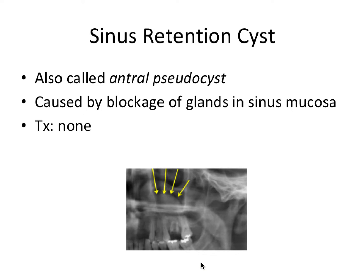Now we have sinus retention cysts. To separate that from mucus retention cysts, sinus retention cysts involve blockage of glands in the sinus mucosa — we can't see it clinically but we can see it radiographically as a radiopaque dome-shaped lesion along the floor of the sinus. No treatment is typically needed as it's pretty benign. The sinus mucocele is similar in that it involves trauma or blockage of the ostium, which is the opening that drains the maxillary sinus into the nasal cavity, but it tends to expand gradually and be more aggressive than a sinus retention cyst.